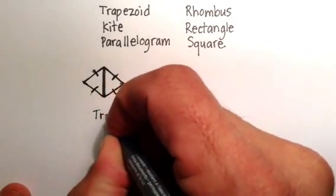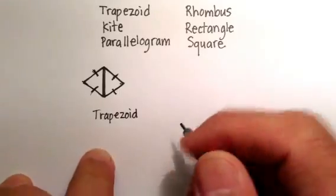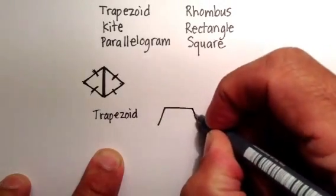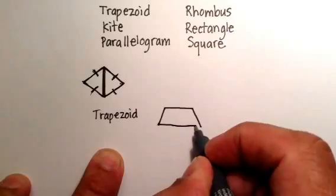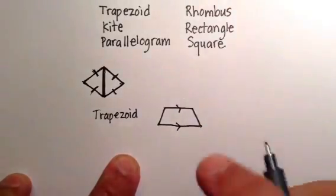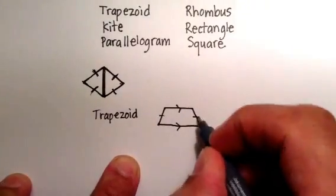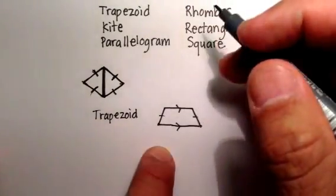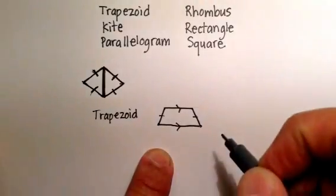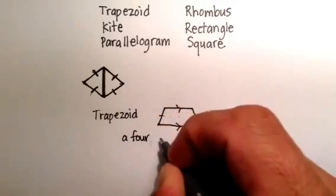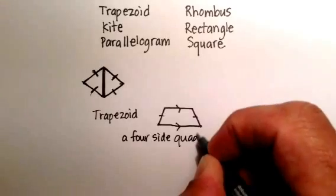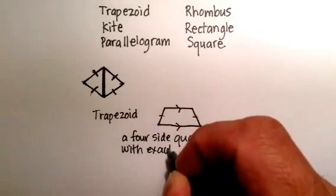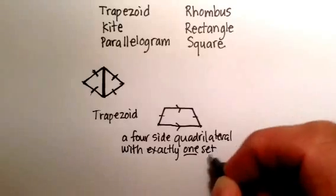Let's go through the first one: a trapezoid. Let me draw one and see if you can come up with a definition. So a trapezoid might look something like this. The essential definition of a trapezoid is a four-sided quadrilateral with exactly one set of parallel sides.